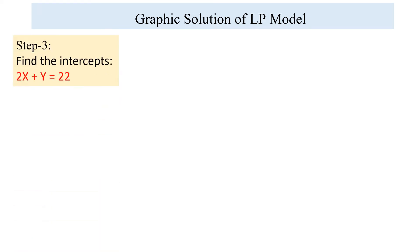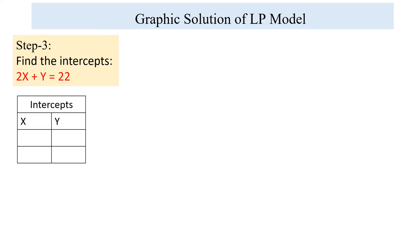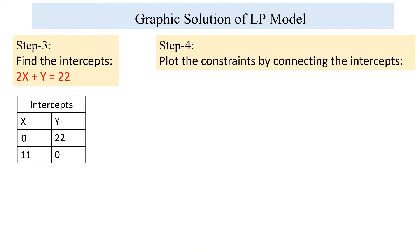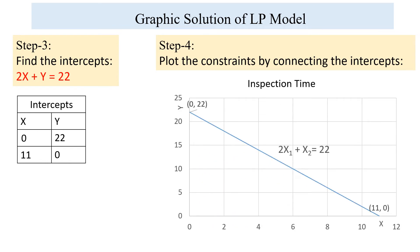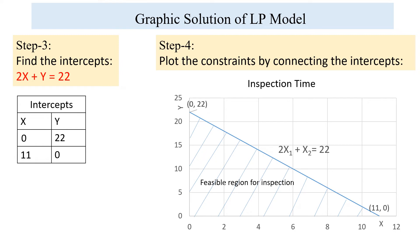As done for assembly time, we repeat the same process for the remaining constraints — inspection time and storage space. For the inspection time constraint 2x plus y equals 22: when x equals 0, y equals 22; when y equals 0, x equals 11. We plot these points on the XY axis and connect them. The feasible region for inspection time is shaded below the line, since the constraint is less than or equal to.